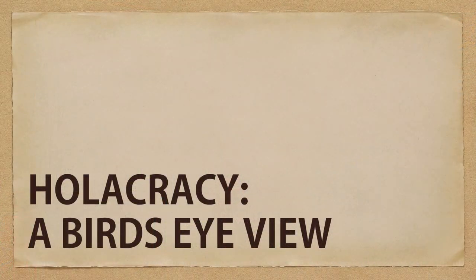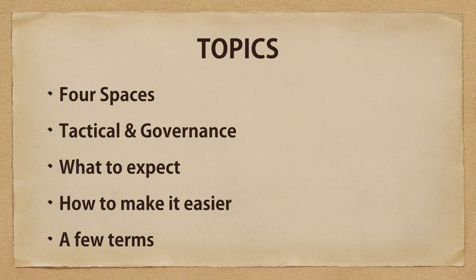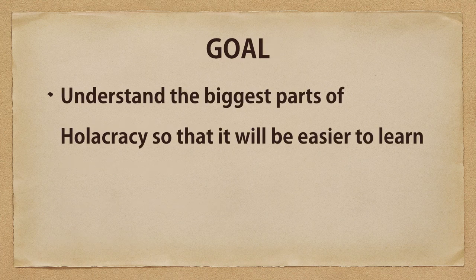This is called Holacracy: a bird's eye view. We're going to cover five things. First, we're going to talk about four spaces. Then we're going to talk about tactical and governance. We'll talk about what to expect when you start your implementation and how you can make it easier. We'll also go over a few terms that are helpful to know. The goal is to help you understand the biggest parts of Holacracy so that it will be easier to learn.